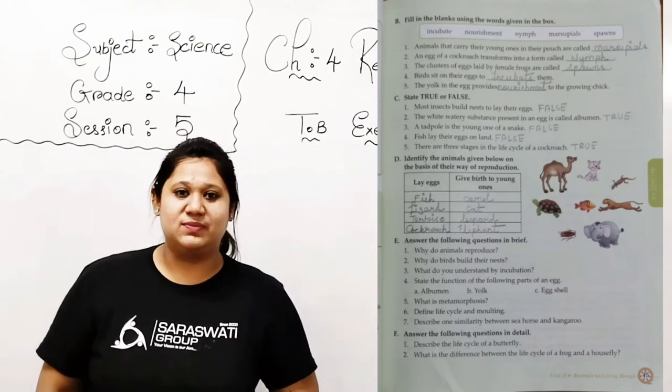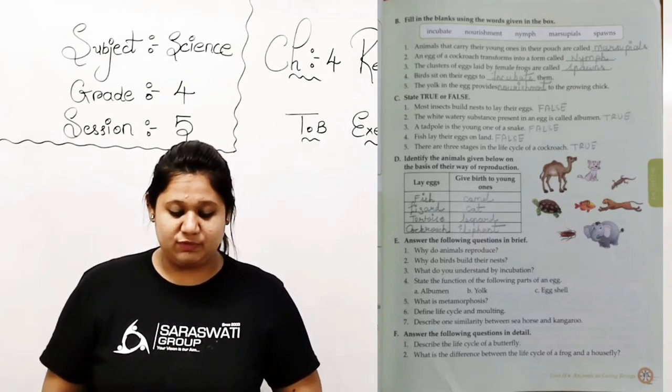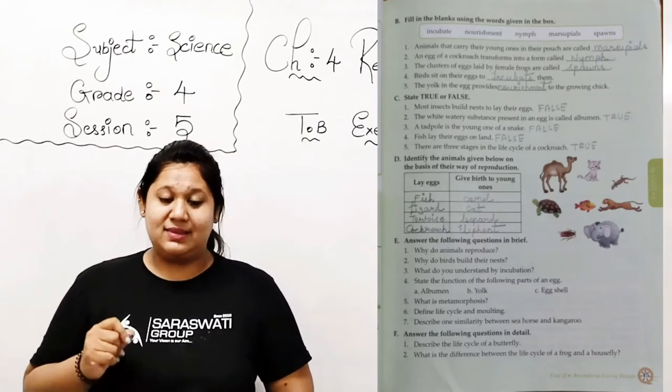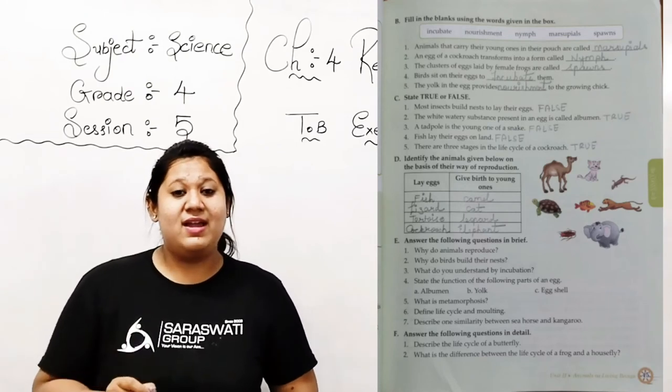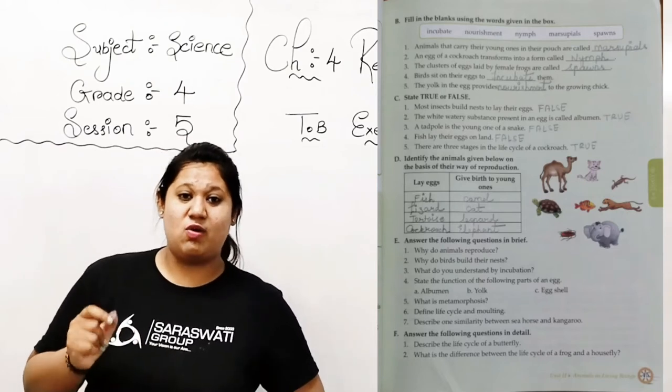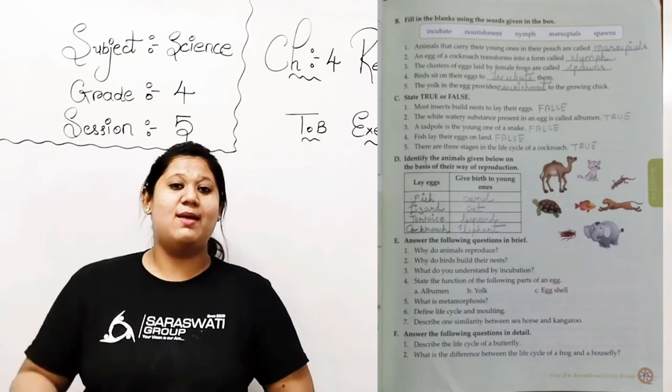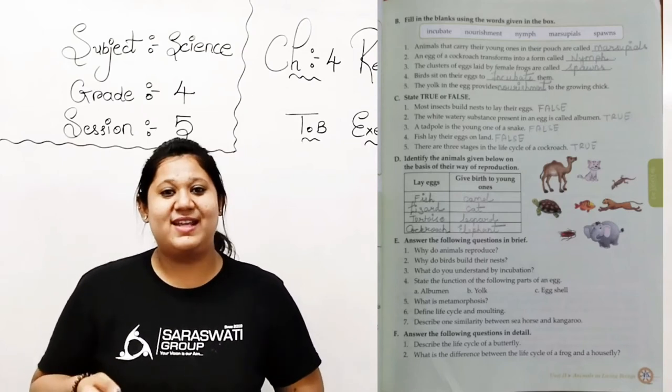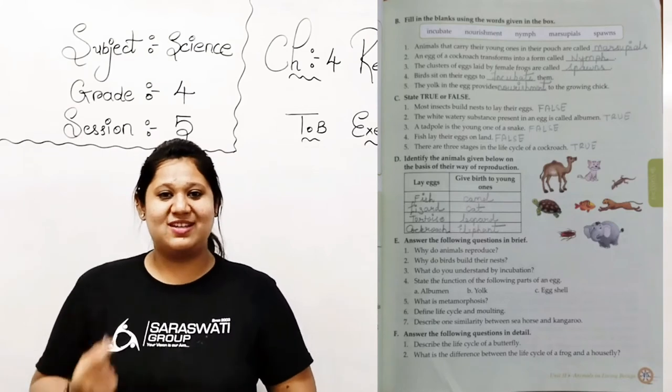Now number 2: an egg of a cockroach transforms into a form of cockroach. There is one thing that cockroach lays eggs, right? When after hatching from that egg, which is the form of cockroach? Yes, we are going to call it as nymph. N-Y-M-P-H. Clear?